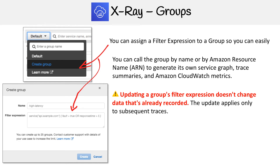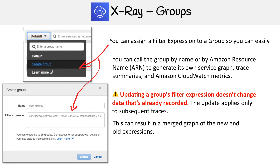I do want to warn you about these groups — this is just the nature of how they work. When you create a group and set a filter expression, and then later — say a week later — you want to adjust that filter expression, it's not going to retroactively apply to all previous data. It's only going to apply the new filter expression to future data. So there's an issue where the data doesn't exactly represent what you expect, because you have this old expression and the new expression.